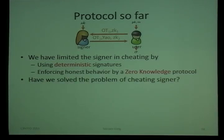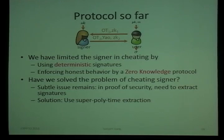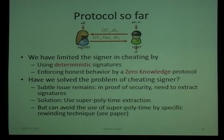Have we solved the problem of the cheating signer? Actually, some issues still remain. In the proof of security — arguing blindness — we need to extract the signatures being generated. For that, we can rely on super-polynomial extraction that the zero-knowledge protocol already provides. However, that can be avoided by using specific rewinding techniques; we won't get into details here, but you can look at the paper.